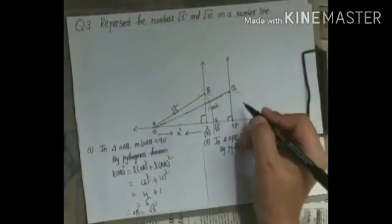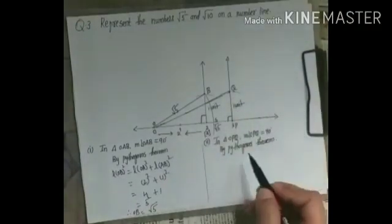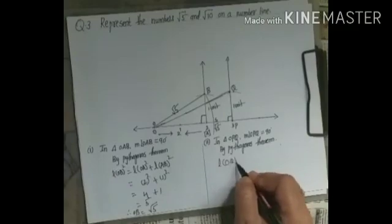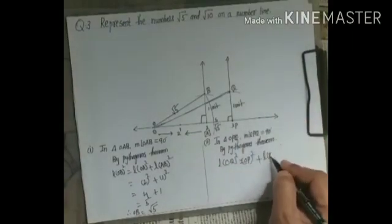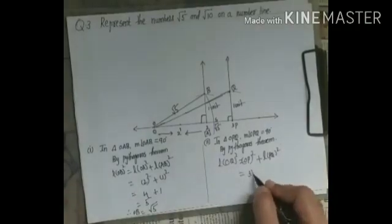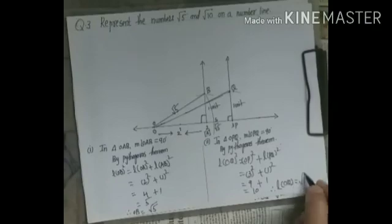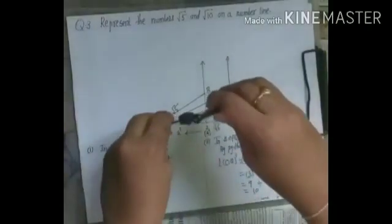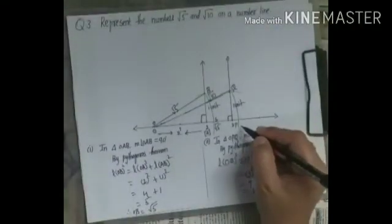PQ is 1 unit. Using the Pythagorean theorem: OQ² = OP² + PQ². OP is 3 units and PQ is 1 unit. So OQ² = 3² + 1² = 9 + 1 = 10. Therefore OQ = √10. Keep the compass on O and pencil on Q, draw an arc cutting the number line. You have now got √10 marked on the number line. This is how you construct irrational numbers on the number line.